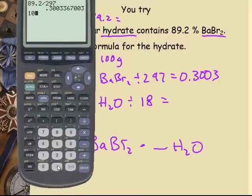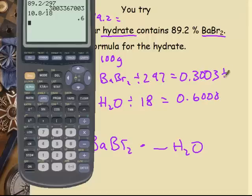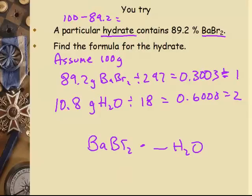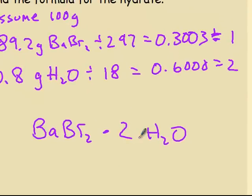You can see that one right away. We're going to divide by the smaller one, which is this one, and that gives us a one. That gives us a two. So the formula for our hydrate is going to be a one to two ratio. This is barium bromide dihydrate.